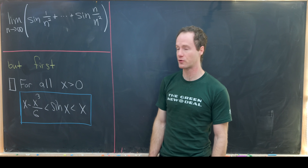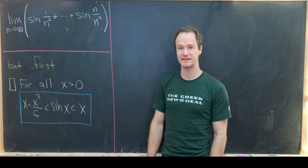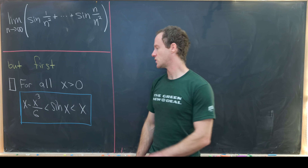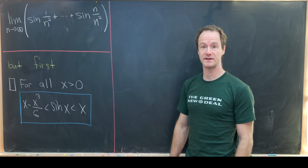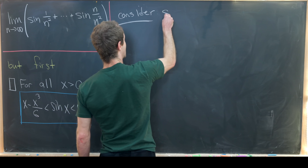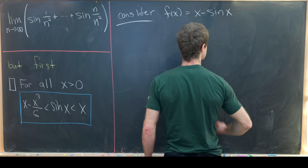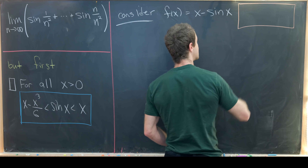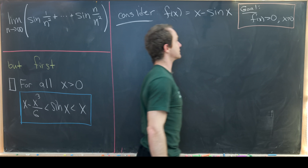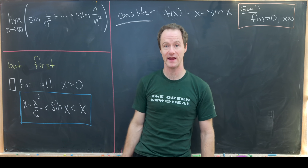There are several ways we could prove this inequality — for instance, using Taylor approximations on either side, or the alternating series test and partial sum approximations. The way I want to do it is a bit simpler. Let's focus on the right-hand side: sine x is less than x. We'll consider the function f of x equal to x minus sine of x, and our goal is to show that f of x is bigger than 0 when x is bigger than 0, which implies x is larger than sine of x.